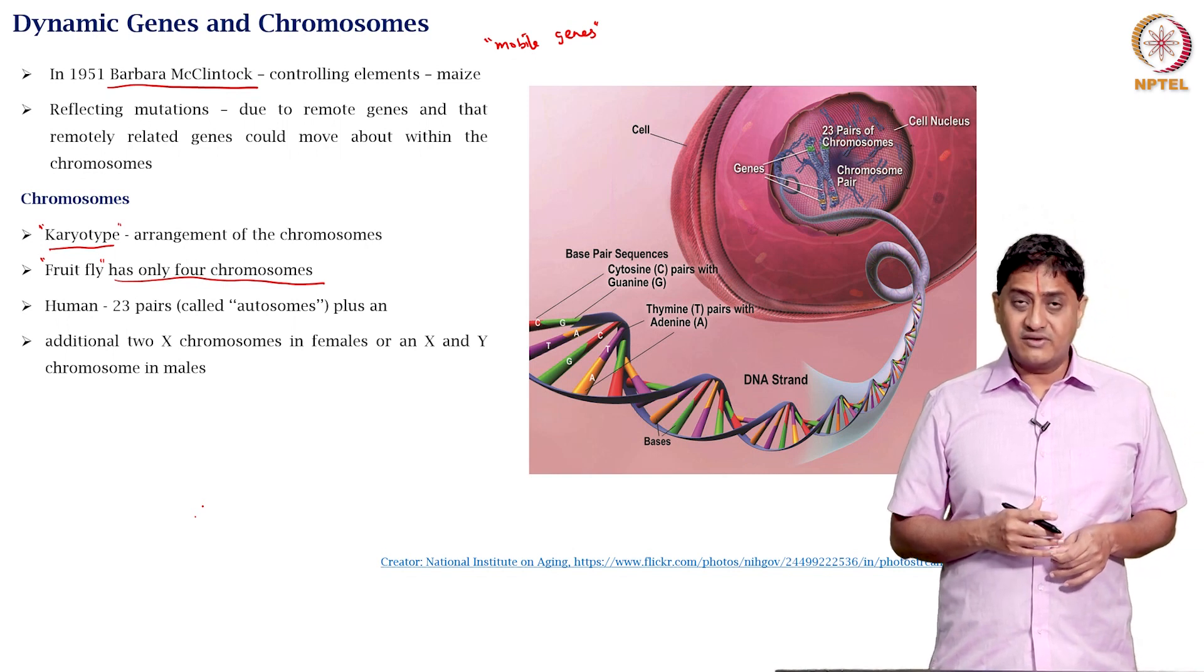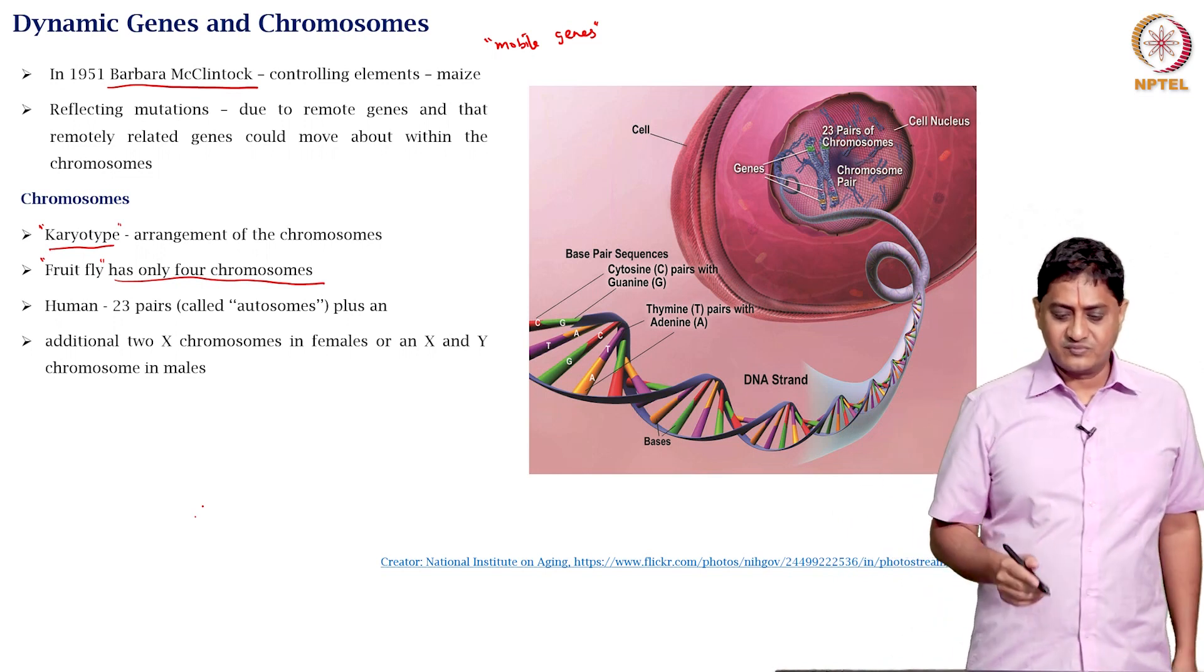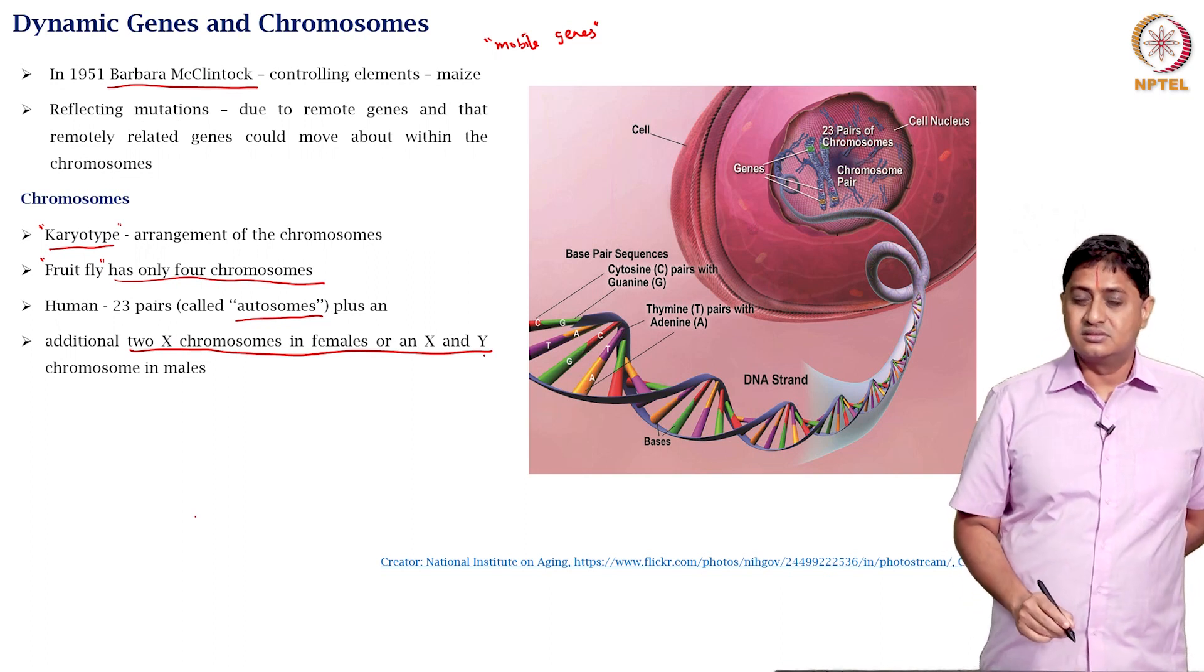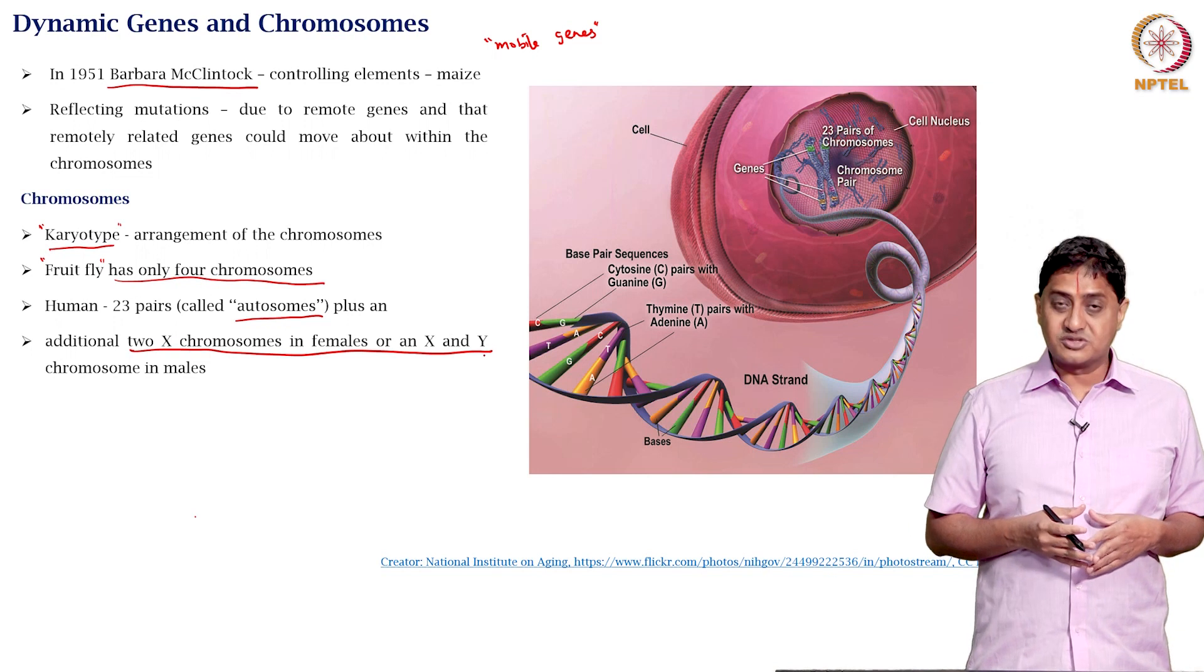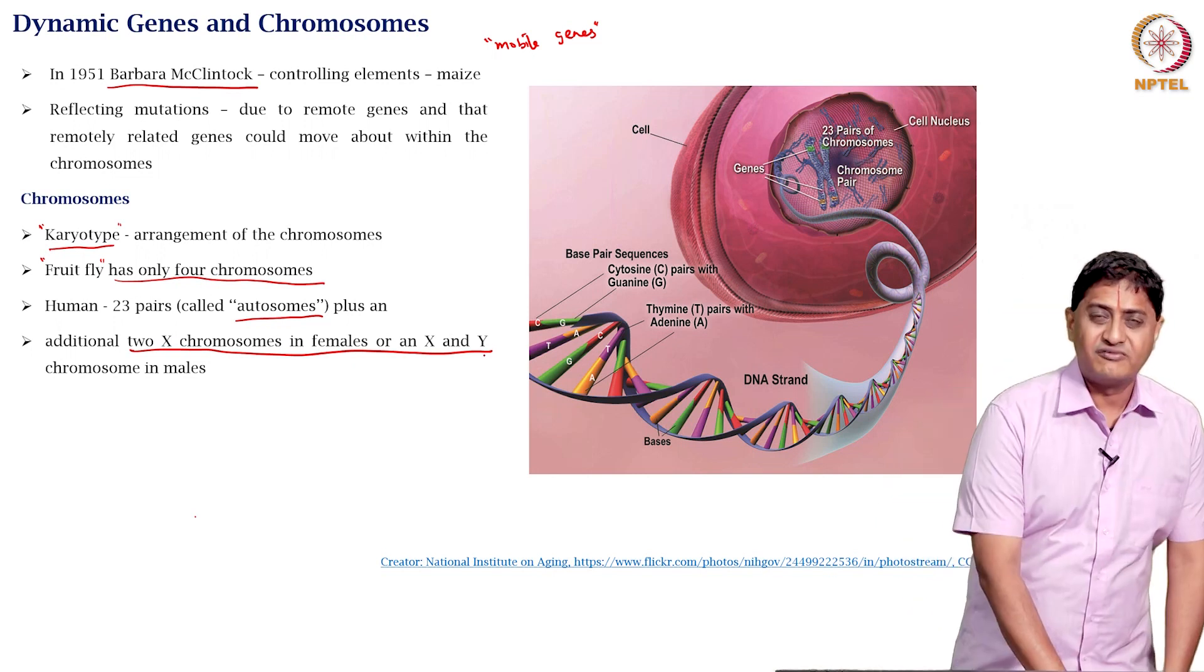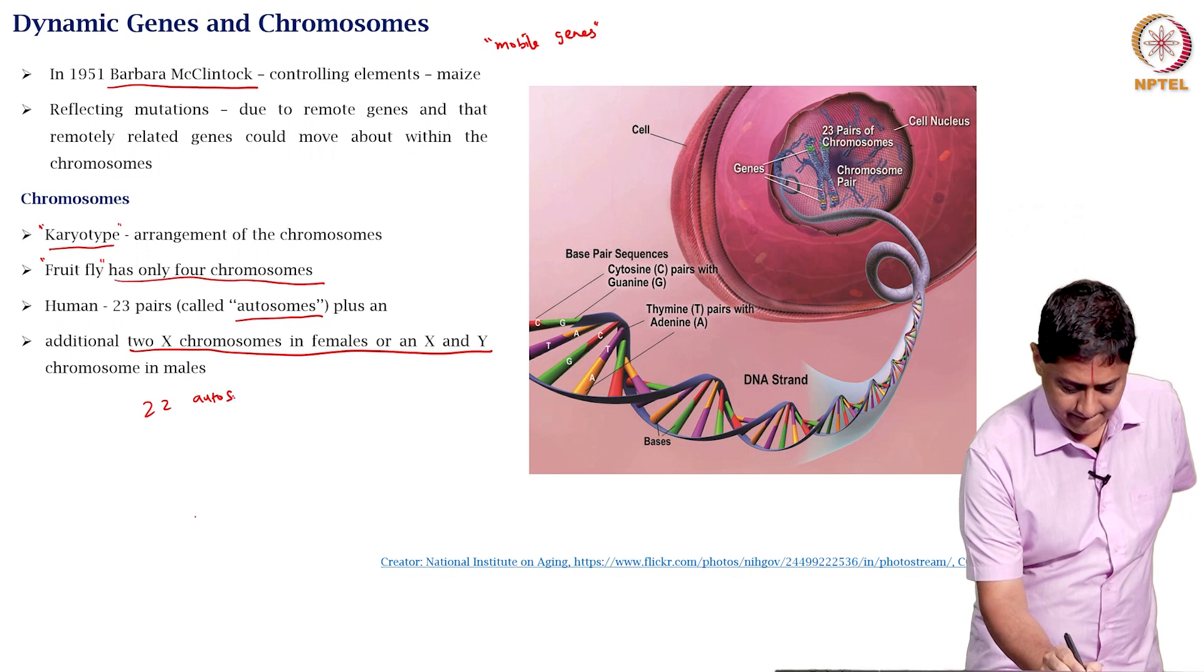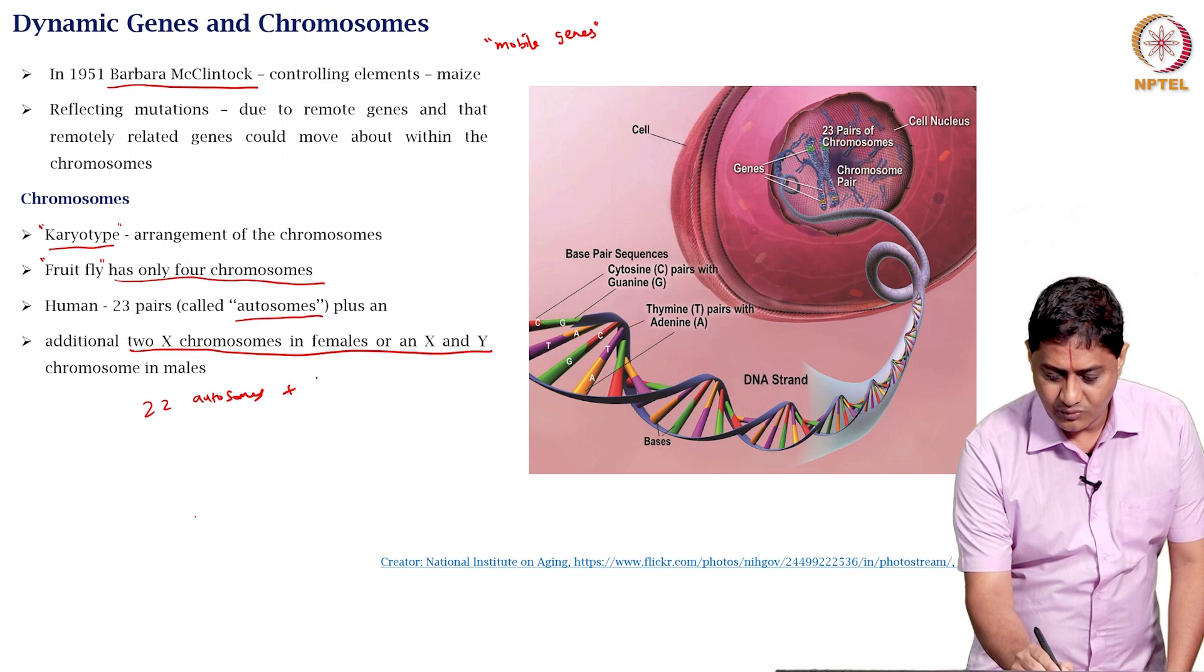In humans, it was suggested first there were 23 pairs called autosomes and an additional 2 X chromosomes in females or an X and Y chromosome in males. So there were 23 plus 1 was suggested. Finally, in 1956, it was confirmed that the human had 22 autosomes plus 1 sex chromosome.